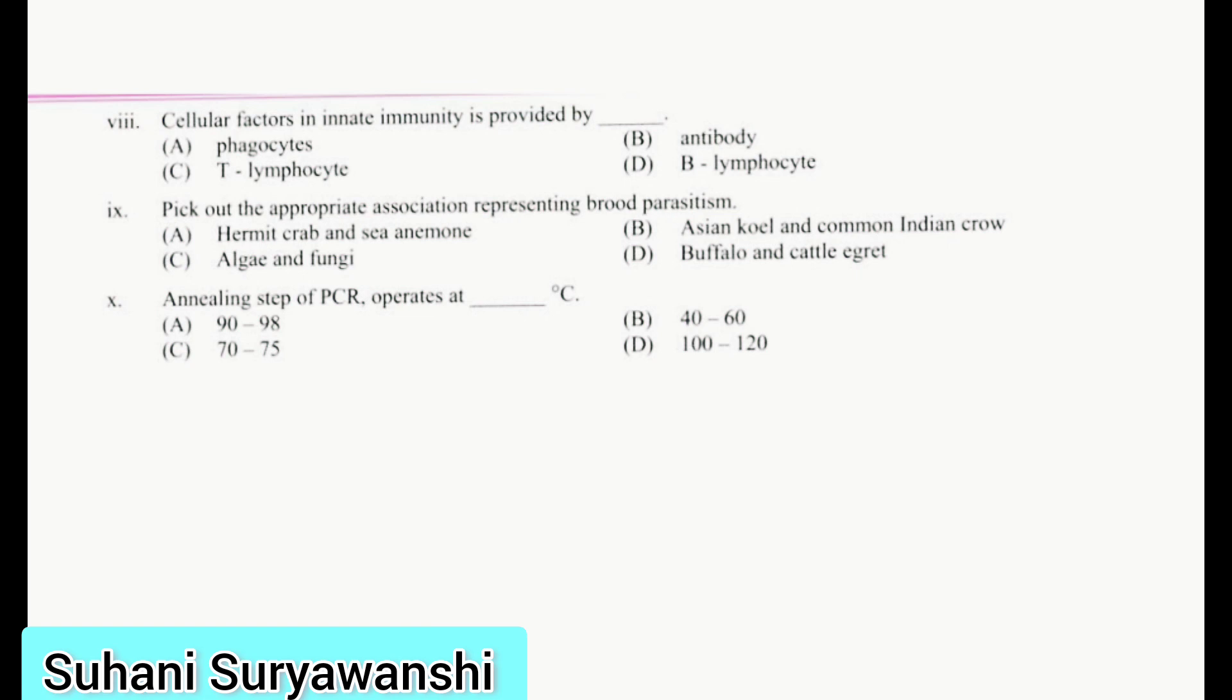Cellular factors in innate immunity are provided by phagocytes. Pick out the appropriate association representing broad parasitism. The correct example from your Organism and Population chapter is koel and common Indian crow. Annealing step of PCR operates at 40 to 60 degree Celsius, so option B is the right answer.